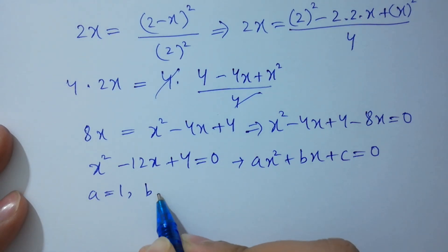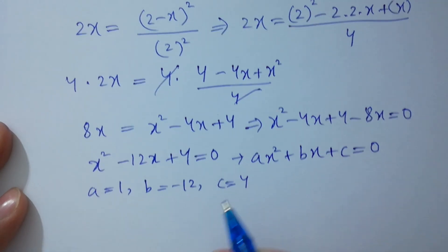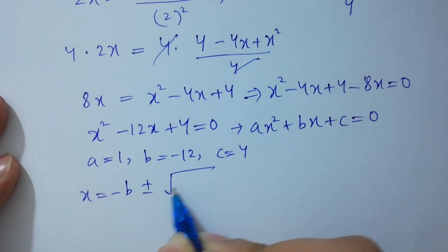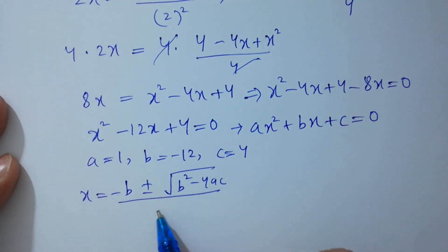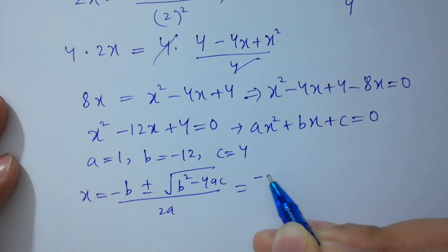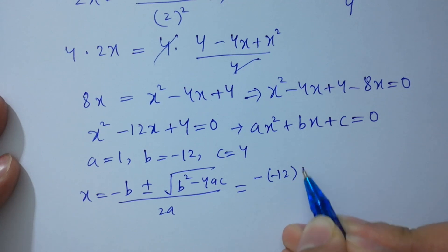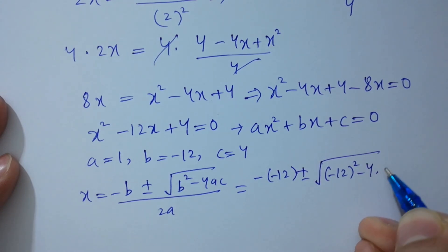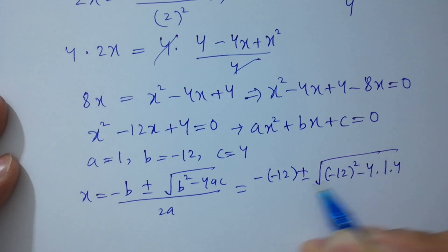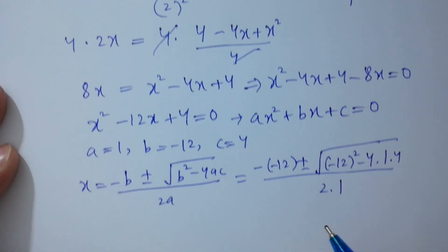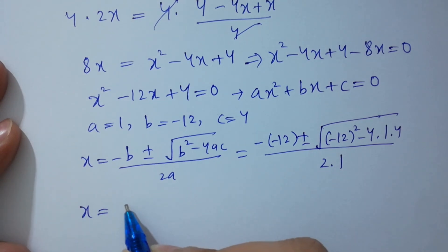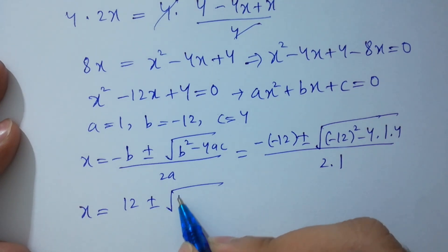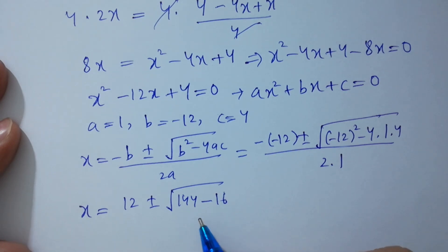Here a equals 1, b equals minus 12, c equals 4. Applying the quadratic formula: x equals minus b plus or minus square root of b squared minus 4ac, over 2a. Substituting: x equals 12 plus or minus square root of (minus 12) squared minus 4 times 1 times 4, over 2.